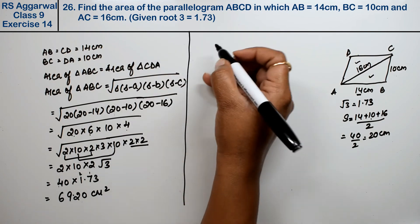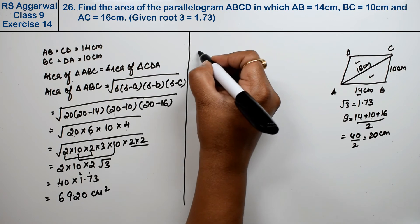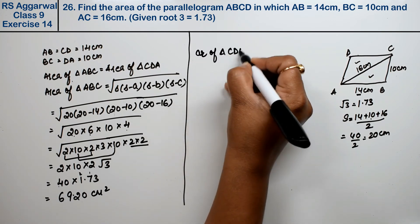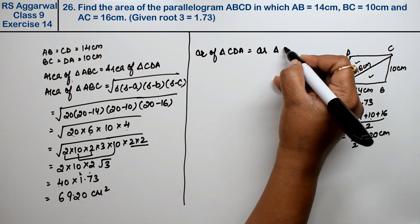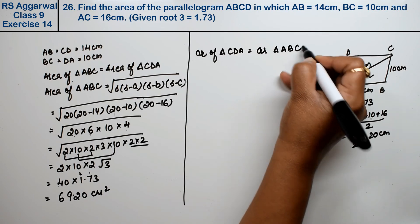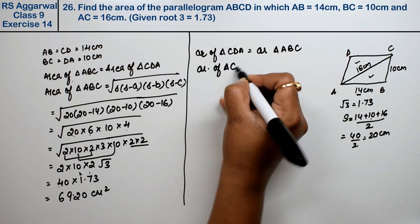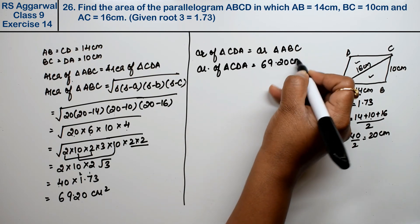Now we said that area of triangle ABC is equal to area of triangle CDA. So the area of triangle CDA is the same, 69.20 cm squared.